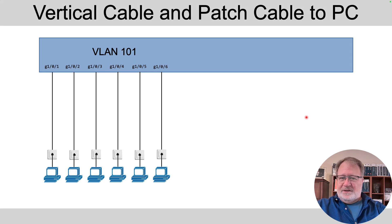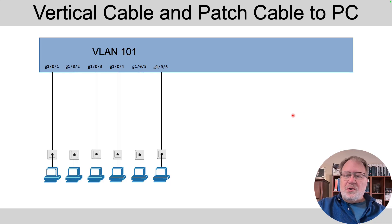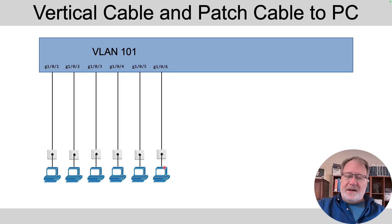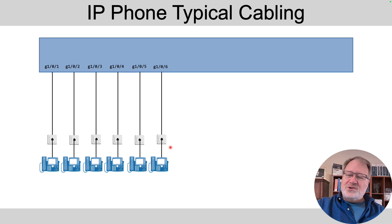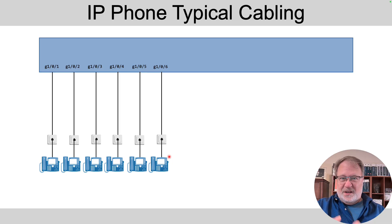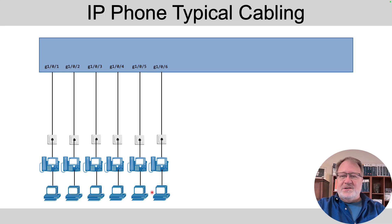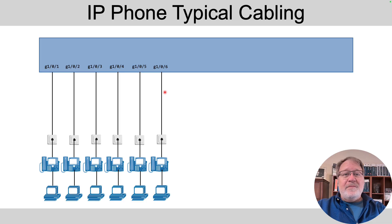For cabling, there's a long cable run from the switch in the wiring closet out to the cubicle or desktop where you've got a wall plate. Then a short patch cable connects from the wall plate to the PC. When you've got an IP phone, you cable that short patch cable in the cubicle to the phone. The phone actually has a two-port switch underneath it, and you plug into one port of that switch, then take another patch cable and plug it into a PC. So now two devices are connected to the same switch port, requiring a little more thought about the configuration.